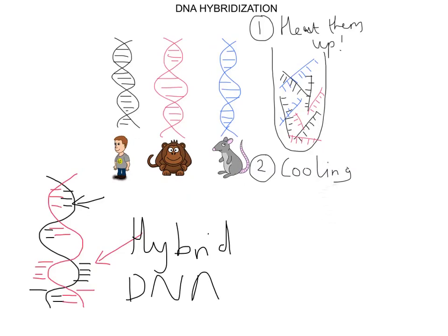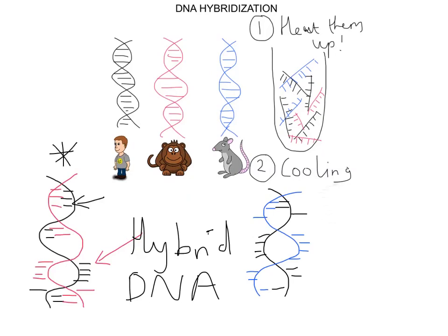Equally, the rat DNA can also form hybrid strands with human DNA when it cools, with some base pairs forming and some not. So upon cooling, you could see human-monkey hybrid strands and human-rat hybrid strands, but you would also see the three original pure strands — human, monkey, and rat DNA — reforming on their own.